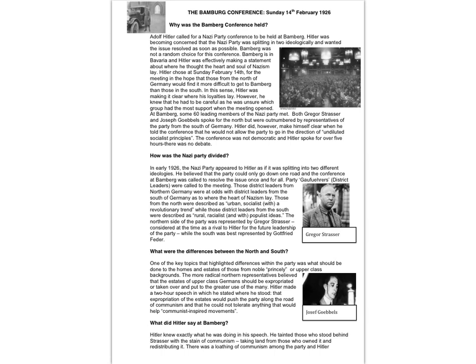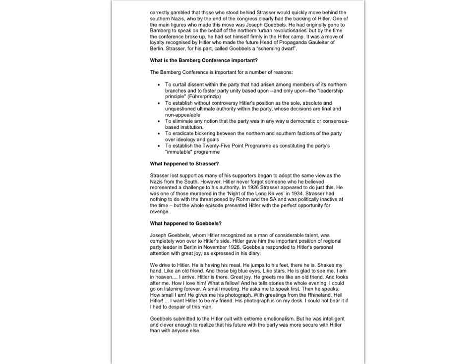What did Hitler say at Bamberg? Hitler knew exactly what he was doing in his speech. He tainted those who stood behind Gregor Strasser and the leadership of the north. He wanted power brought back to the south. Hitler correctly gambled that those who stood behind Strasser would quickly move behind the southern Nazis, who, by the end of the Congress, clearly had the backing of Hitler. One of the main figures who made this move was Joseph Goebbels. He had originally gone to Bamberg to speak on behalf of the northern urban revolutionaries, but by the time the conference broke up, he had set himself firmly in the Hitler camp. It was a move of loyalty recognised by Hitler, who made him the future head of propaganda and Gauleiter of Berlin — one of the top party jobs. Strasser, for his part, called Goebbels a scheming dwarf.